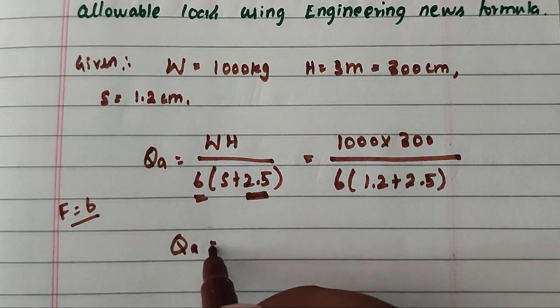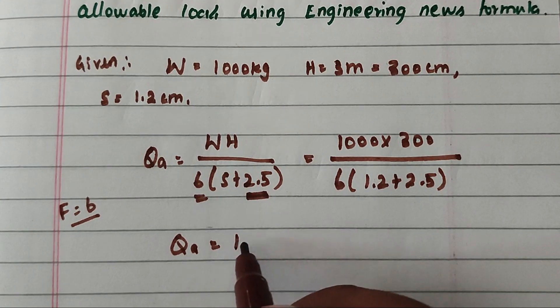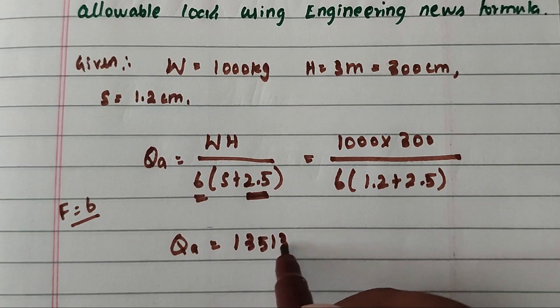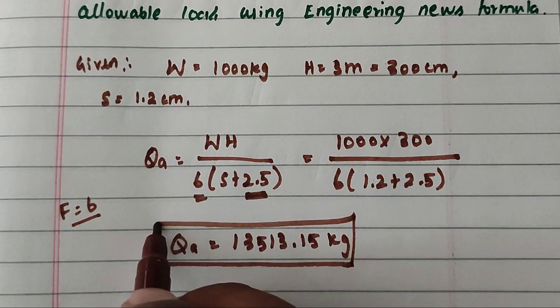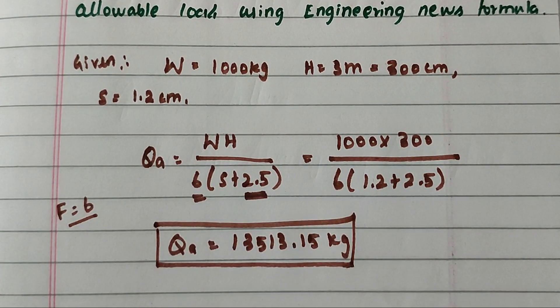Solving this, we get QA = 13513.15 kg. This is the allowable load. This is the method to solve the problem. We will see more in the next video.